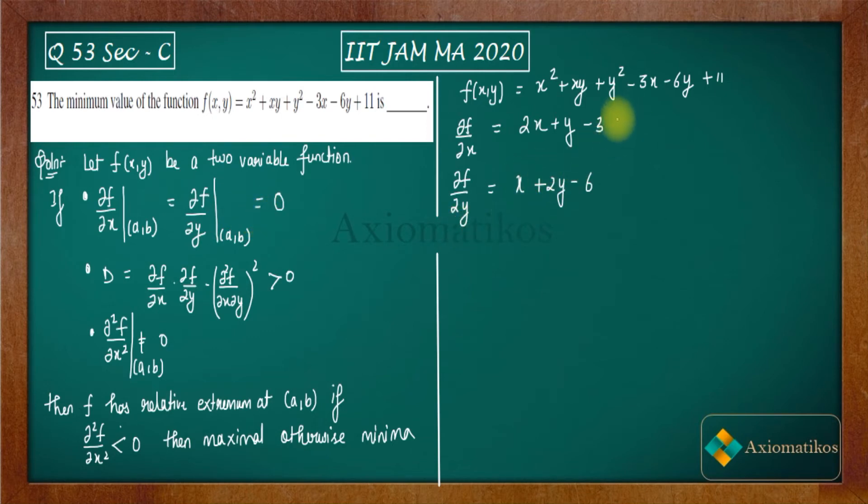If you place these two things equal to 0, you will get 2x + y = 3 and x + 2y = 6. So now let us solve these two equations.